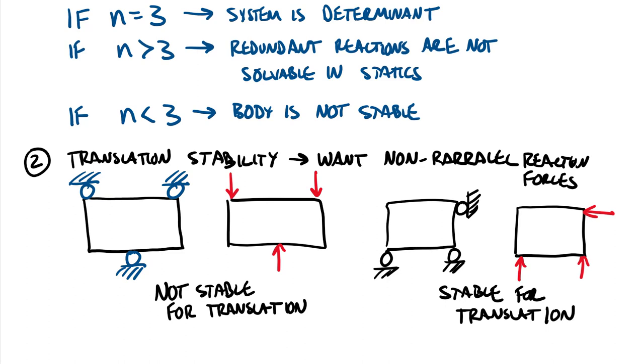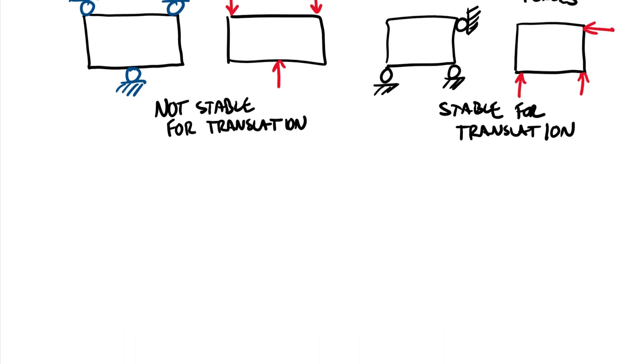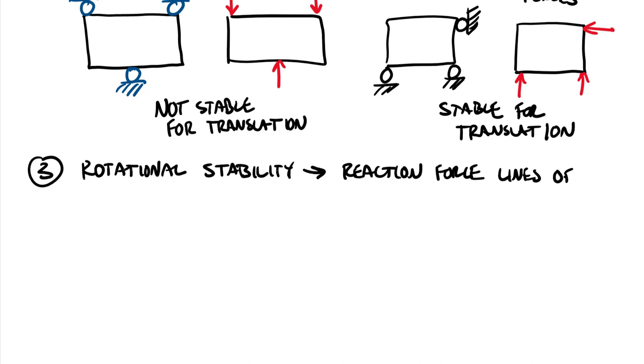And then the last rule that I check is actually related to lines of action. And this one has to do with rotational stability. So this is rule number three. And so to prevent, so for rotational stability, our rule is that the reaction force lines of action need to intersect at greater than or equal to two points to prevent rotation.